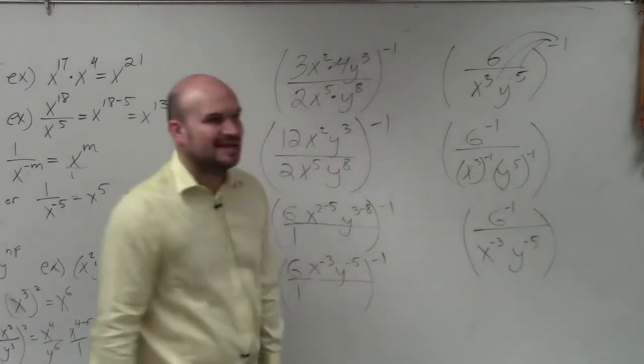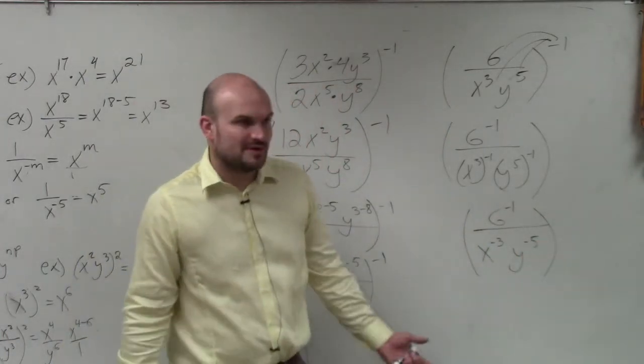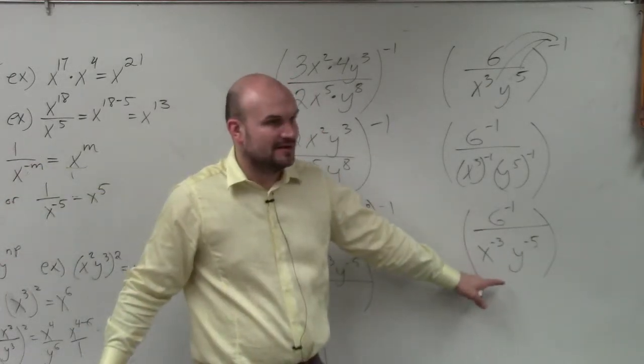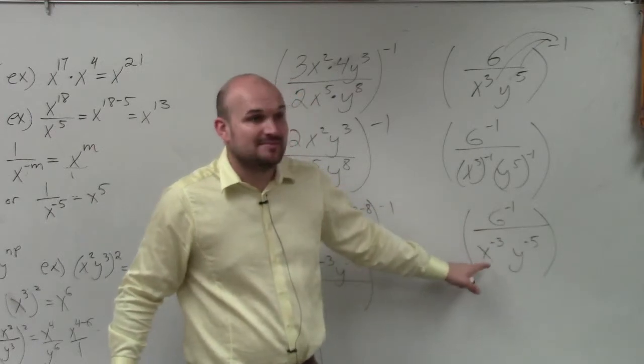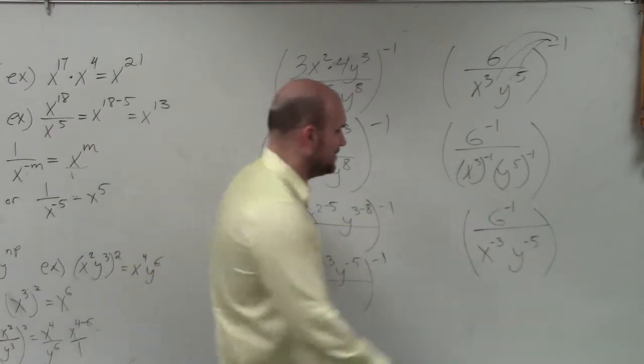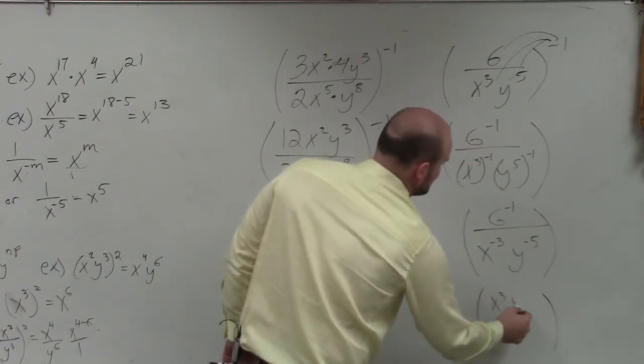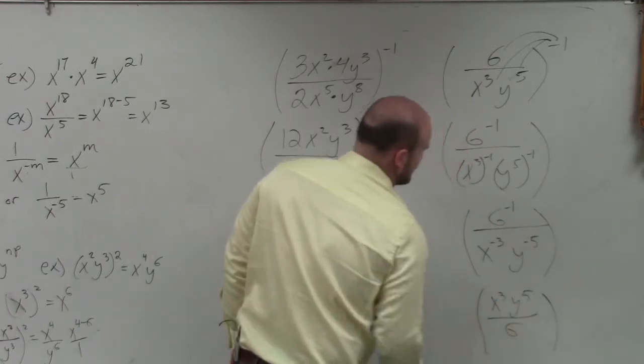Well, ladies and gentlemen, we can't write them as negative exponents. So, if we have a negative in the numerator to write a positive, we put it in the denominator. If we have a negative in the denominator to make a positive, we write it in the numerator. So, my final answer is x cubed y to the 5th divided by 6.